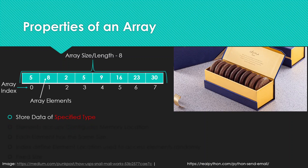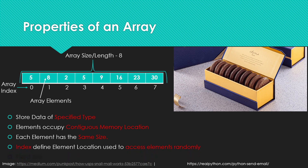The number of elements in the array is called the array size, also referred to as the array length. The array length of this particular array is eight because we've stored eight numbers. To be clear: arrays store data of the same data type, the elements occupy contiguous memory locations, and each element has the same size. That size might vary from one programming language to another and depending on the data type, but most of the time it might be four bytes.